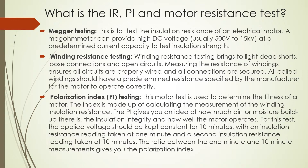The second question: what is the IR, PI, and resistance test for a motor? IR means megger testing — this is done to test the insulation resistance of an electrical motor. A megger meter can provide high voltage DC, usually 500 V to 15 kV, at a predetermined current capacity to test the motor insulation strength.